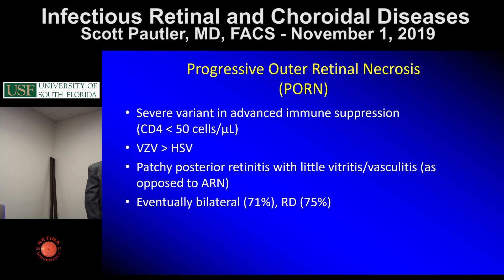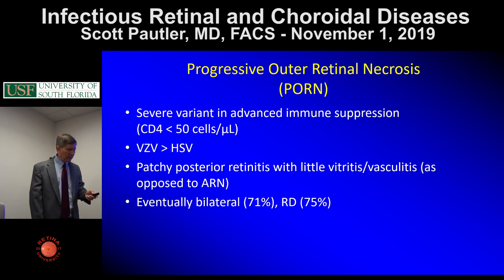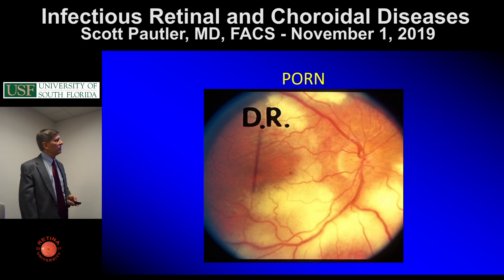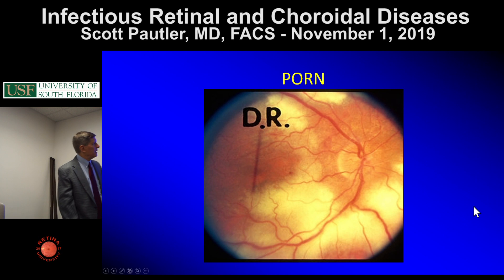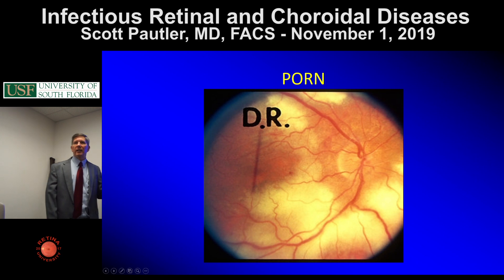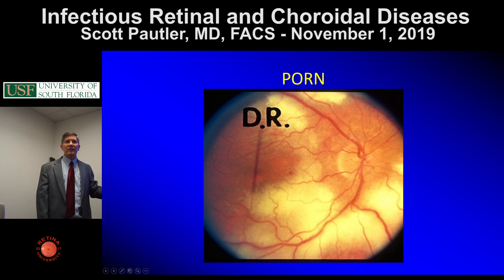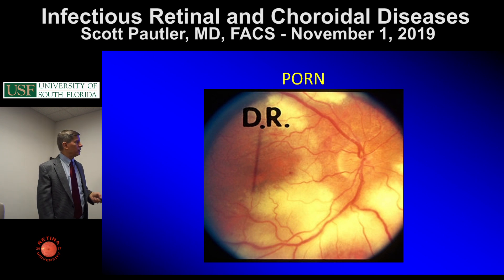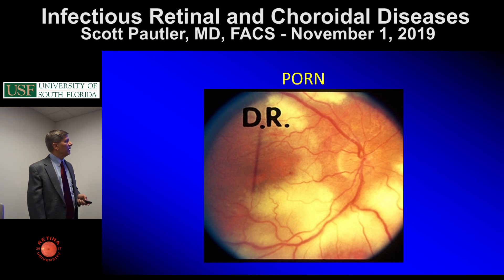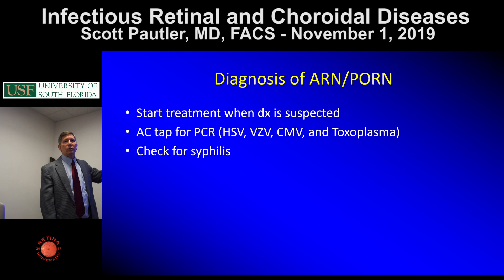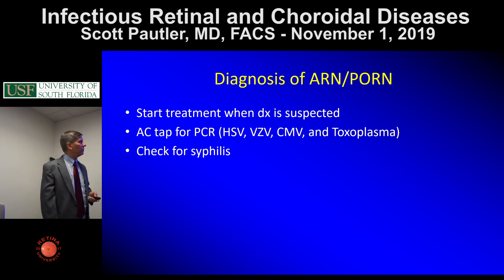PORN is eventually bilateral and detachments are very common. In acute retinal necrosis you're going to see vitritis; you don't really see much of that in PORN because they lack immune status. For diagnosis, start treatment immediately if you suspect the disease — get patients on antivirals quickly. It's critical. If needed, put them in the hospital.